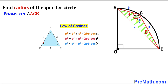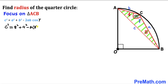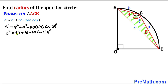In our triangle, gamma is angle ACB (135°), lowercase a is 8, lowercase b is 4, and lowercase c is side AB. Substituting: c² = 8² + 4² − 2·8·4·cos(135°), which simplifies to c² = 64 + 16 − 64·cos(135°).